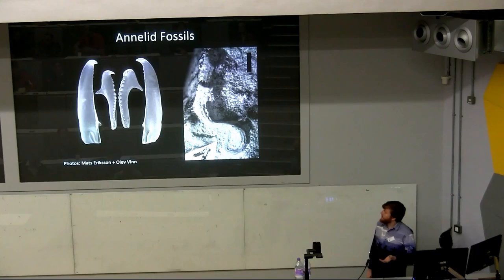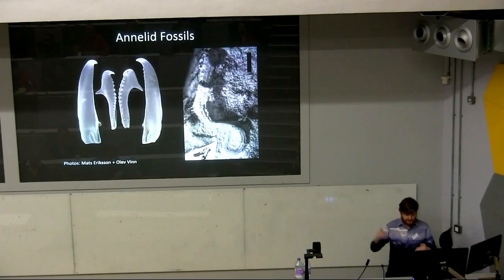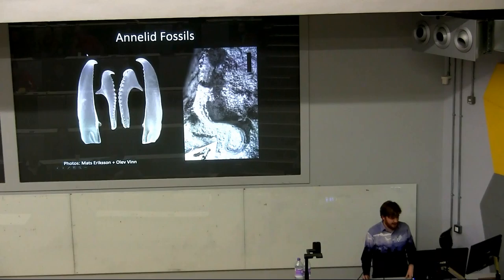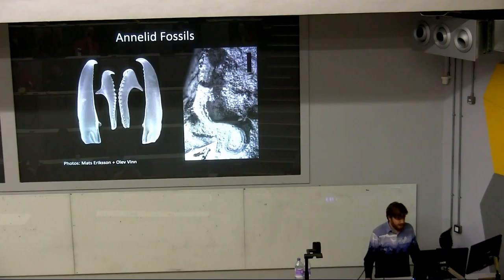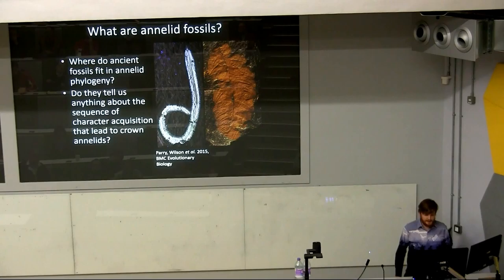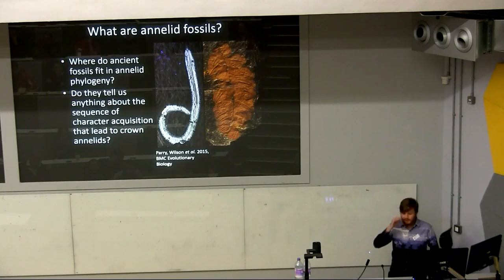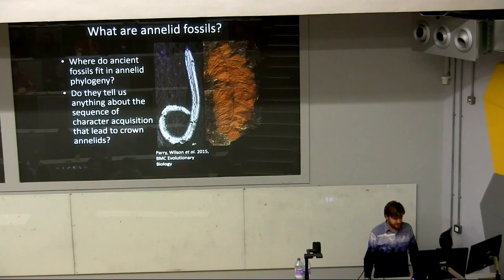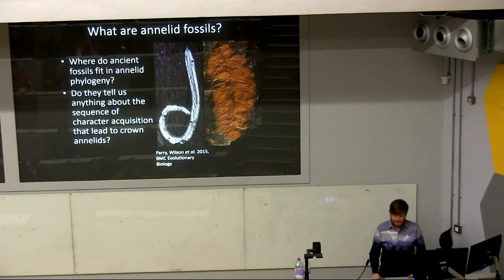Moving on to the unique insights from annelid fossils: typical annelid fossils are recalcitrant hard parts punctuating the fossil record, such as a King's diamond eye jaw apparatus from the Silurian described by Mats Eriksson, and the more familiar serpulid worms. My research focuses on exceptionally preserved annelid fossils to investigate where these animals fit in annelid phylogeny, and whether they reveal character acquisition leading to crown group annelids that can't be derived from phylogenomic analyses alone. These fossils can include truly exceptional specimens — one we described just a few months ago preserves musculature in three dimensions.